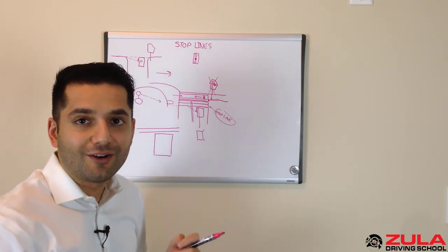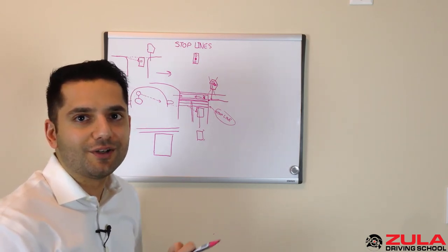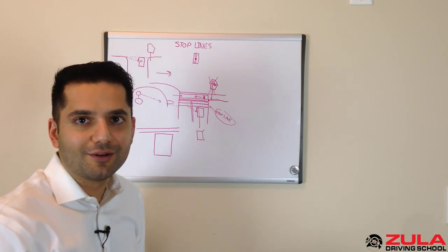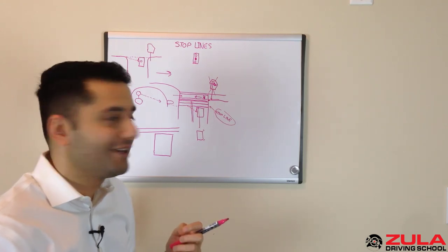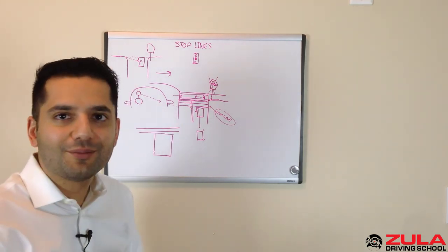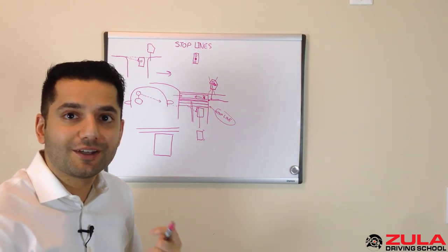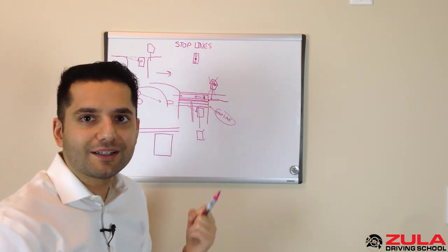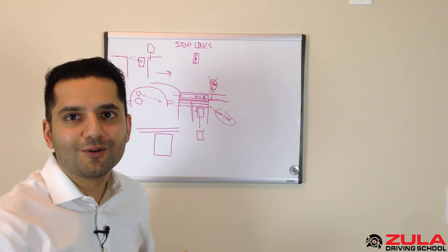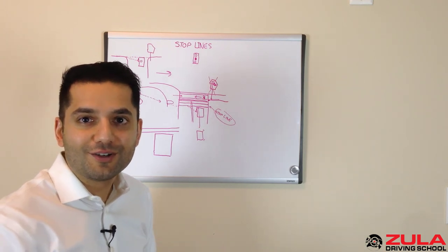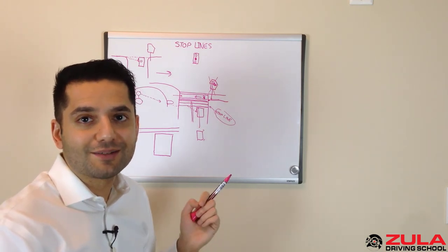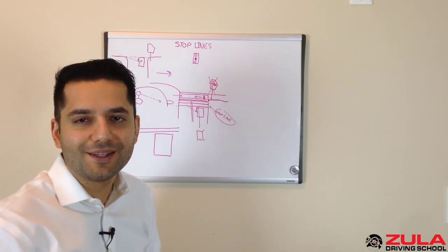we talk about stop lines and lots of different driving scenarios where you encounter stop lines and how you should deal with them. Now, it's one thing for me to stand here and draw lines on a whiteboard. It's another for you to get out there and put this stuff into practice. So be sure to get onto the road with a co-ed driver or a driving instructor and practice making full stops at stop lines. Thank you.